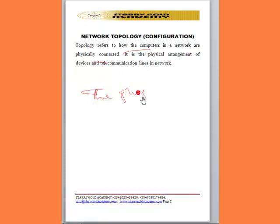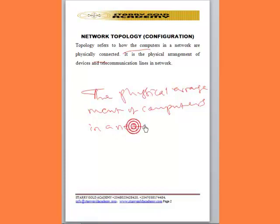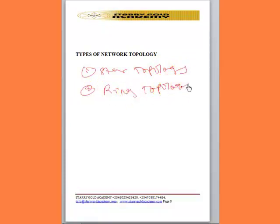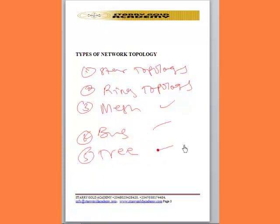Network topology refers to how the computers in the network are physically connected — it is the physical arrangement of computers on the network. When we interconnect our computers together, there must be a way of arranging them. Technically, there are five types of network topology: star topology, ring topology, mesh topology, bus topology, and tree topology. There is also hybrid topology, which comprises two or more topologies combined together.